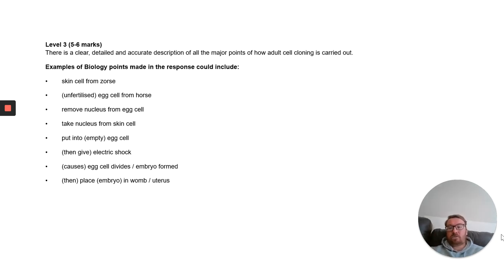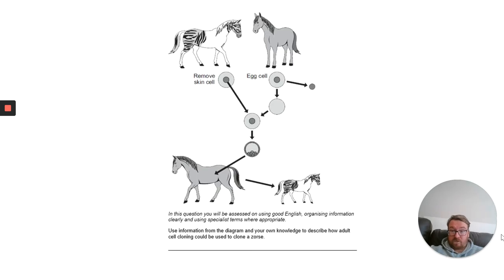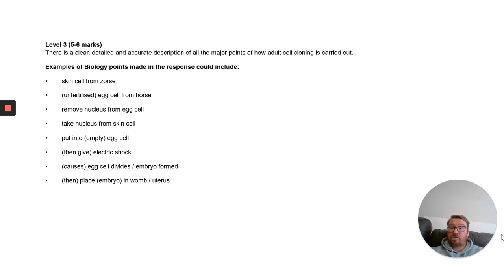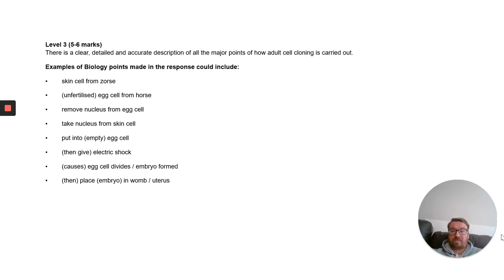To get in the five to six mark bracket, you need a clear, detailed description of all the major points. For example: the skin cell from the source is removed; an egg cell from a horse is removed and its nucleus is taken out; the nucleus from the skin cell is put into the empty egg cell; an electric shock is given to get them to fuse together; the embryo is allowed to form; the embryo is placed into the surrogate mother's uterus. Please mark, check, and correct as needed.